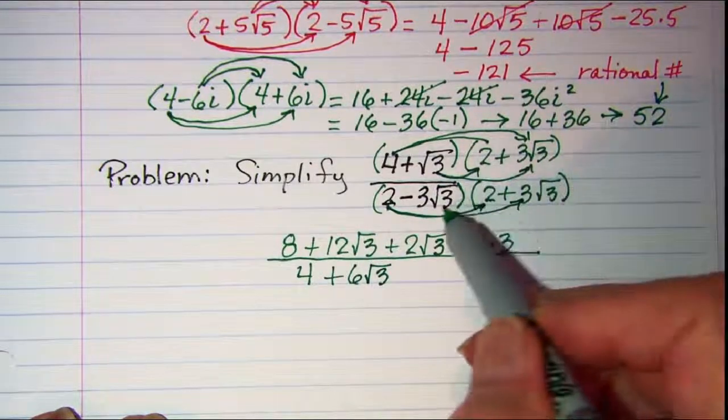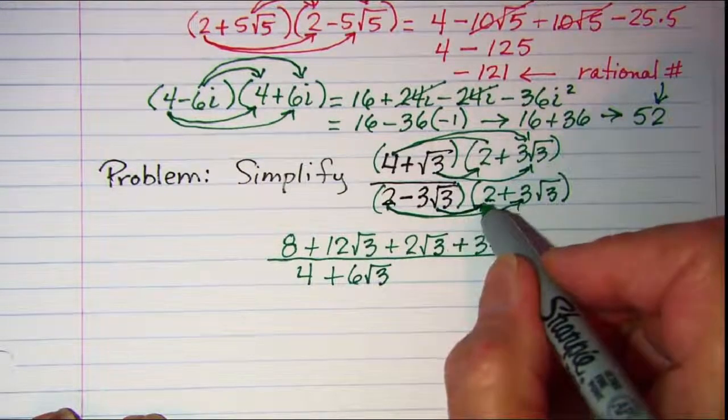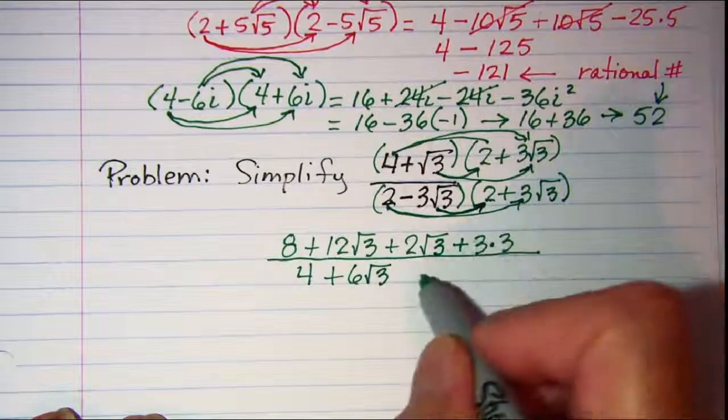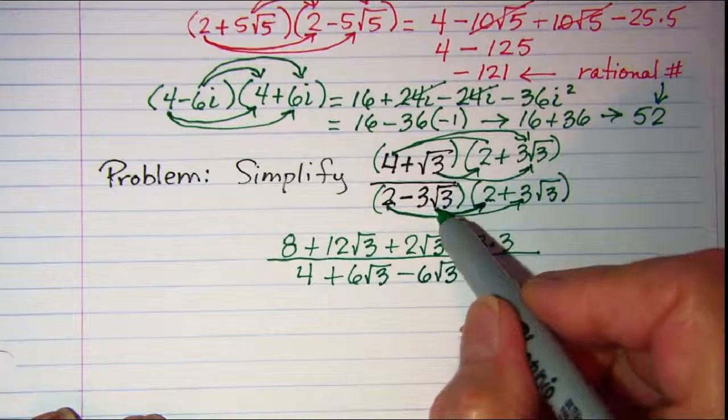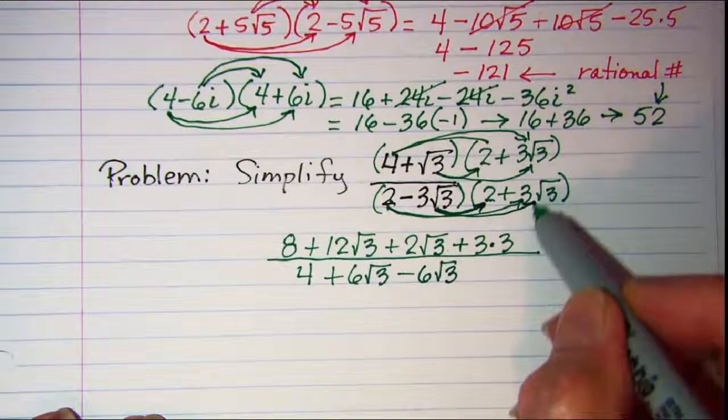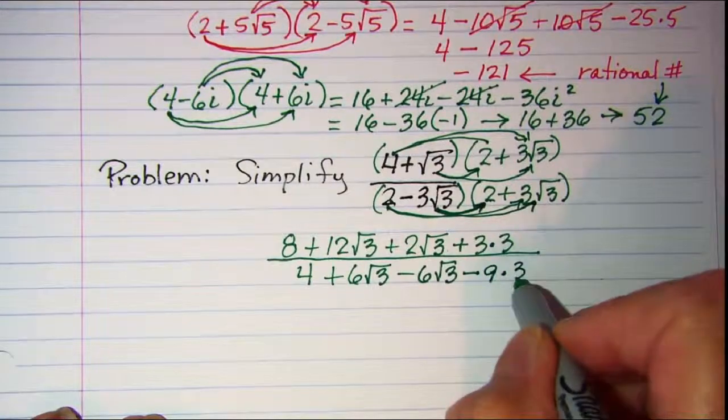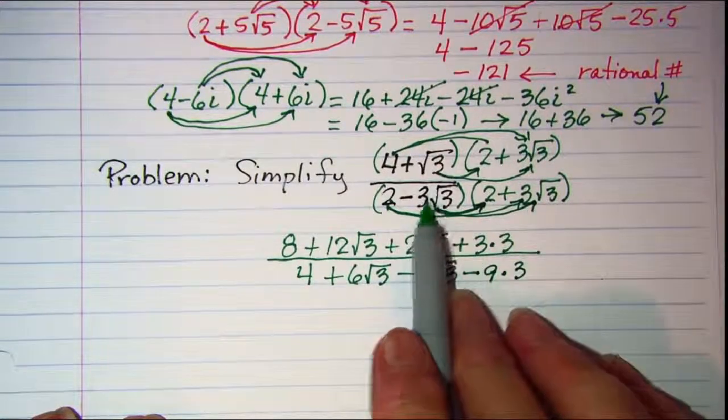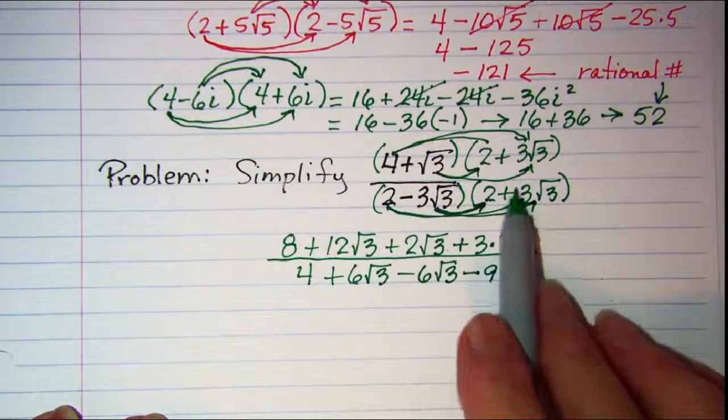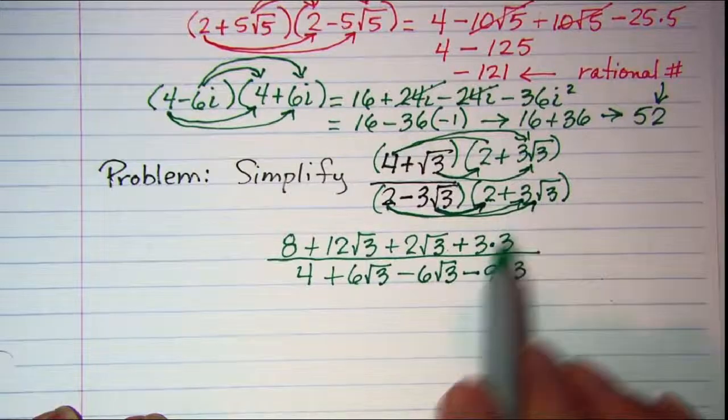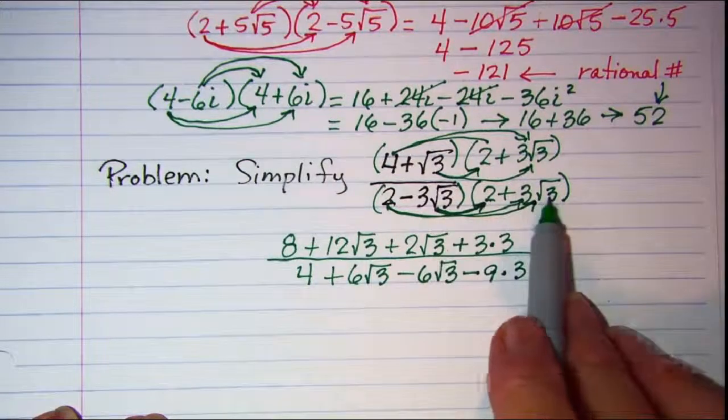Now we'll do the negative 3 root 3. Negative 3 root 3 times 2 is negative 6 root 3. And negative 3 root 3 times positive 3 root 3 is negative 9 times 3. Because I take our 3 coefficient here multiplied by the 3 coefficient here. That's how we got the 9. And then root 3 times root 3 is just 3.